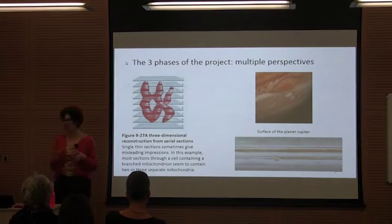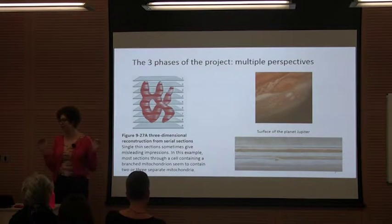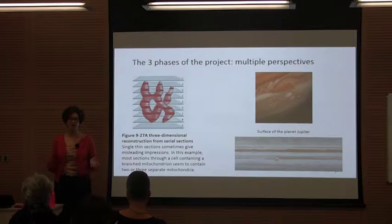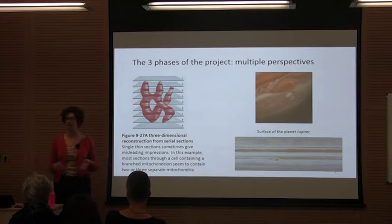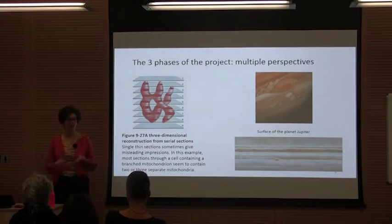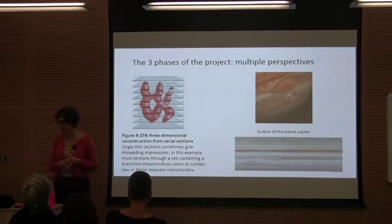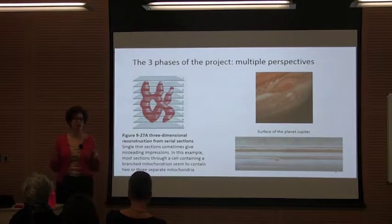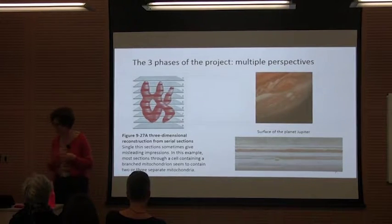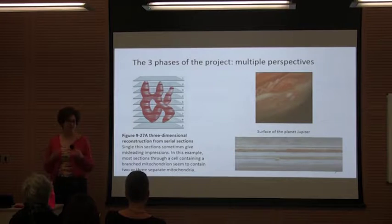In terms of the three phases of the project, one idea I've been thinking about is different perspectives. Multilingualism and language use is a very slippery topic — what are people actually doing with language? Do they even know what they're doing? It's sort of impossible to get a complete picture. I started to think about it in terms of the cross-section of a cell — if you take a cross-section, it doesn't really tell you that much about what shapes are in there.